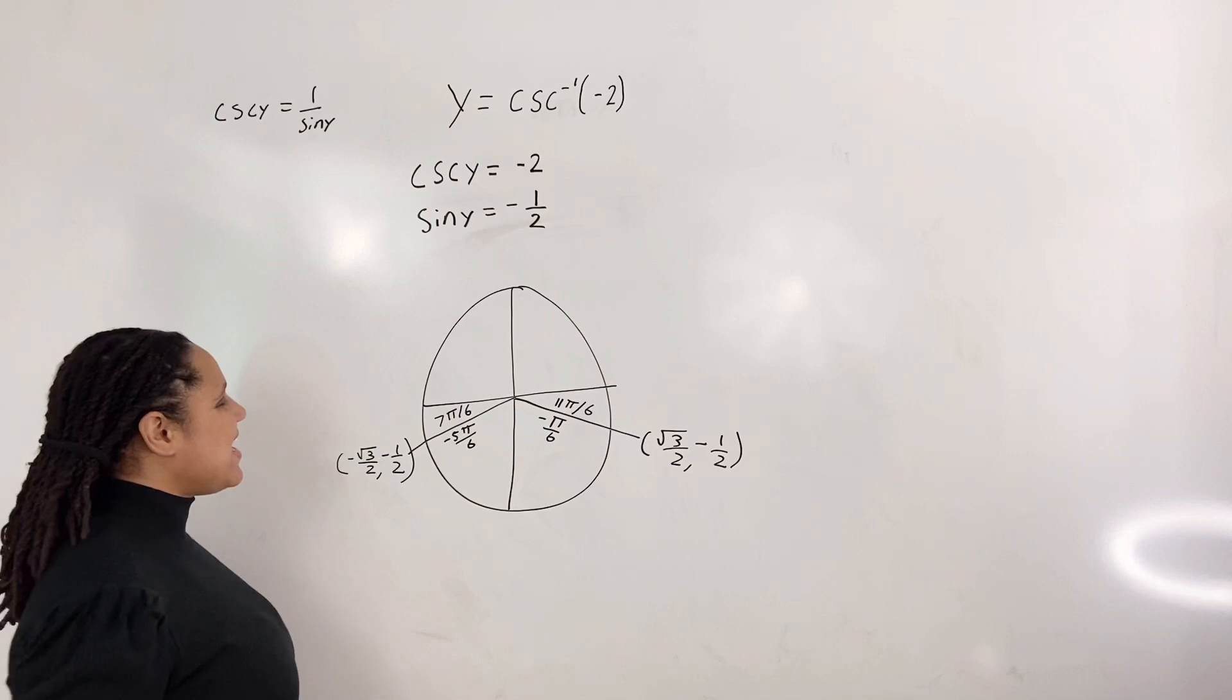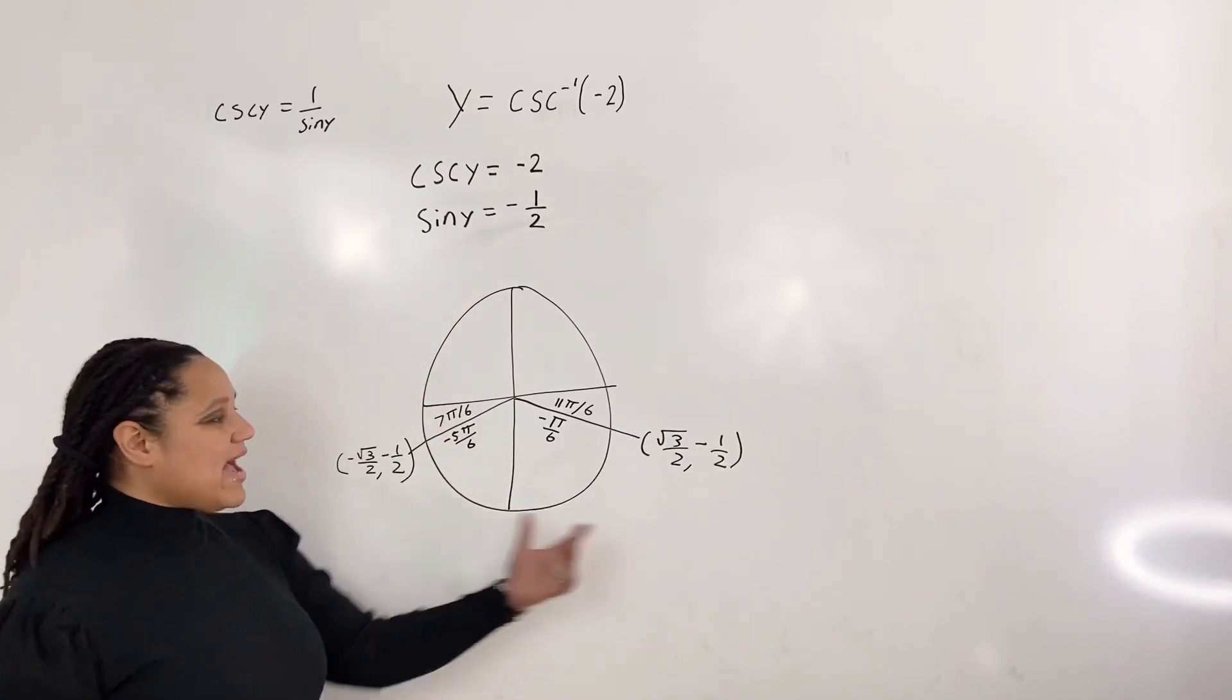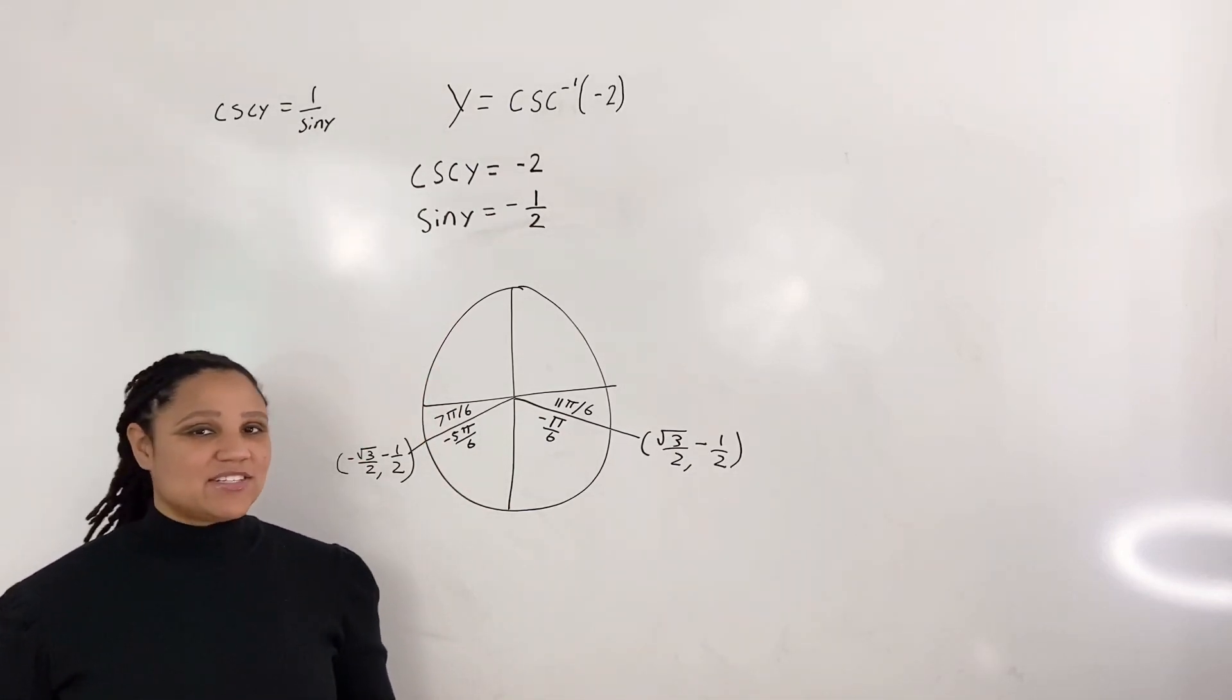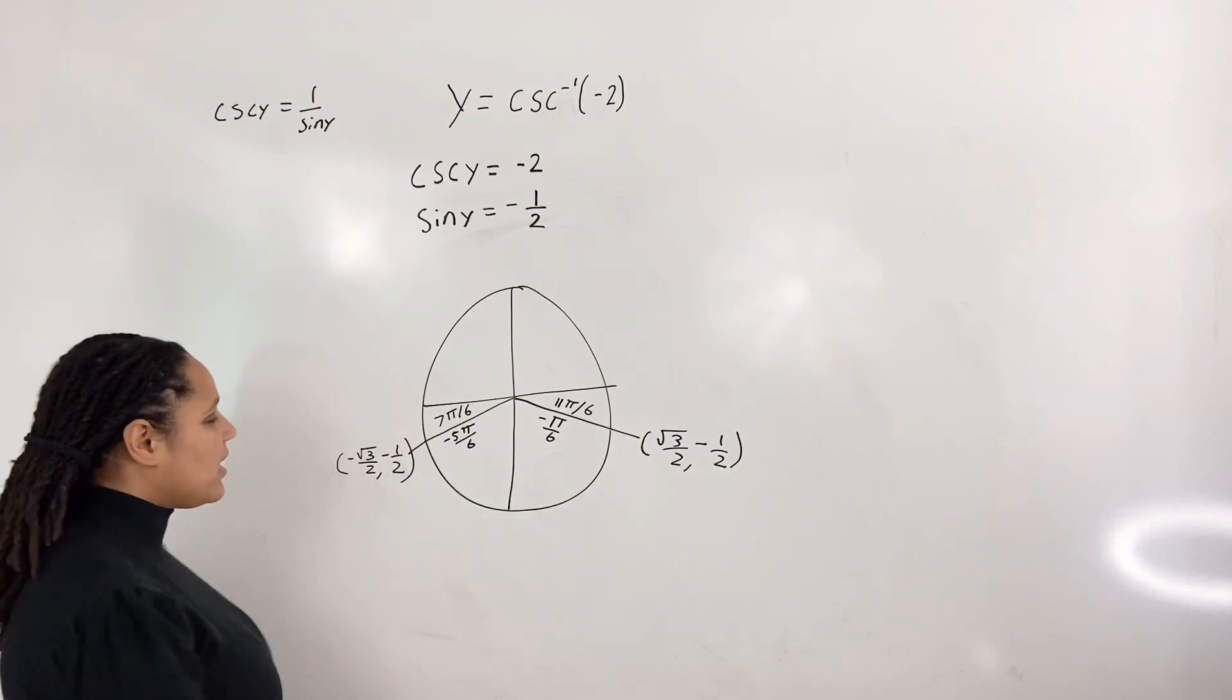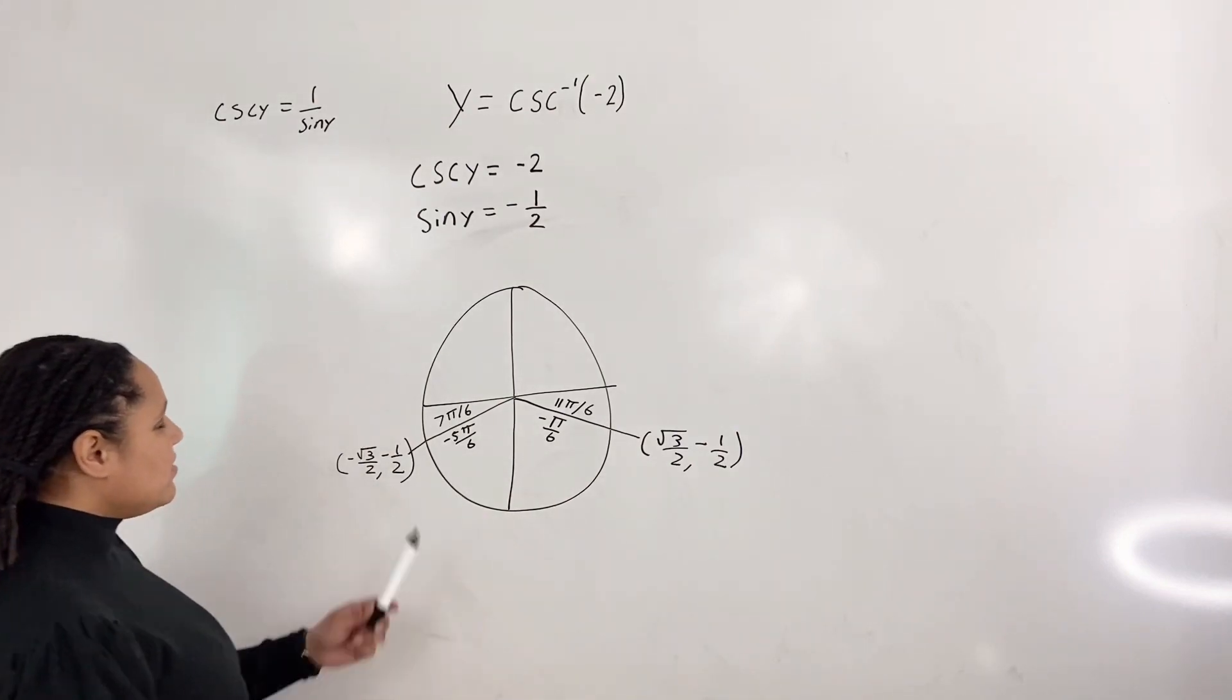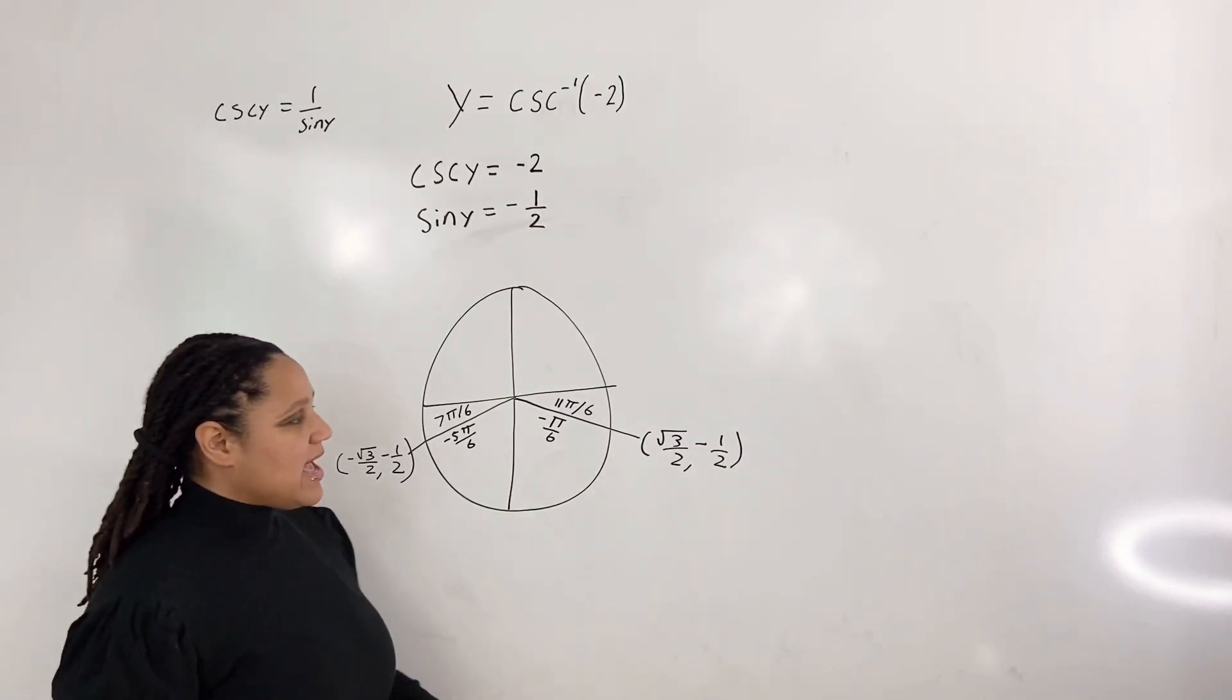Now we know that the sine takes on the y values, and the cosine takes on the x values. So looking at our y values, we see that we have negative 1 half. However,